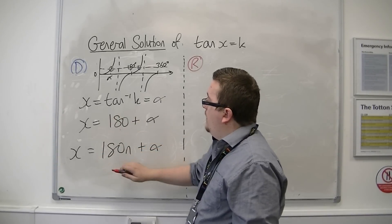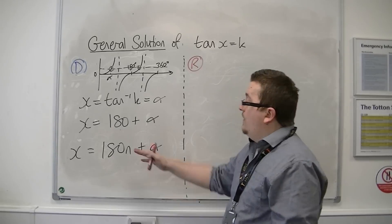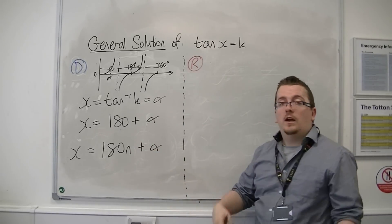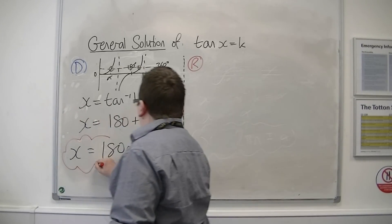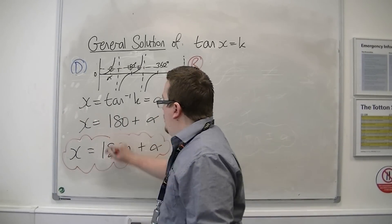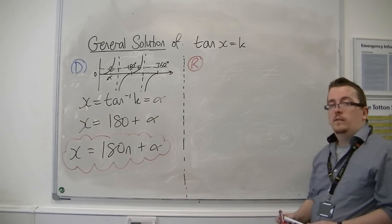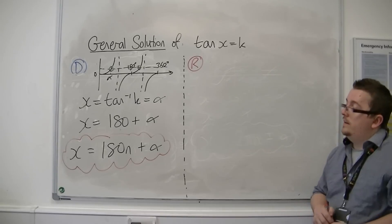If n is 1, I get the second. If n is 2, I get the next one along, and so on. So that is enough to be the general solution for tan, tan x equals k, in degrees.